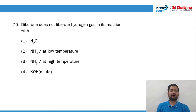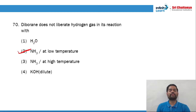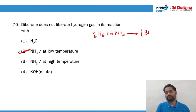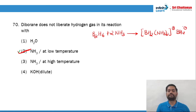Question 70: diborane does not liberate hydrogen gas in its reaction with ammonia at low temperature. What happens is: B2H6 reacts with 2 moles of NH3 to give a complex compound [BH2(NH3)2]⁺ [BH4]⁻. So question 70, option number 2 is the right answer.